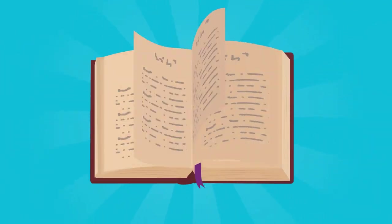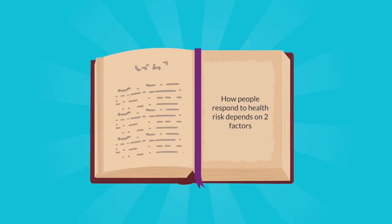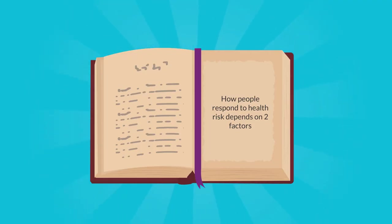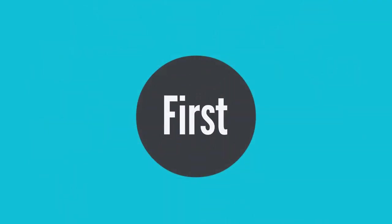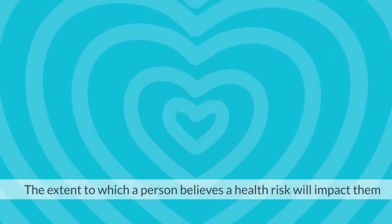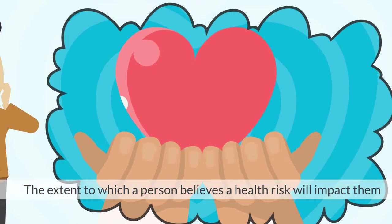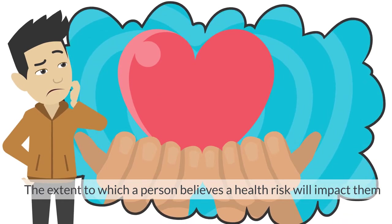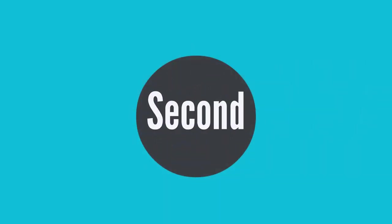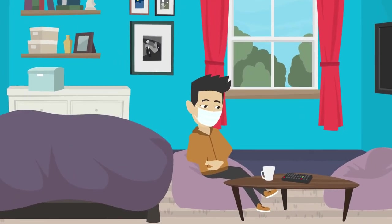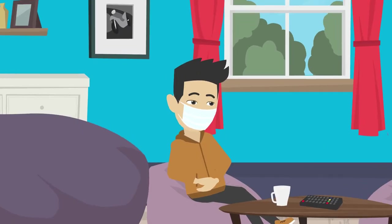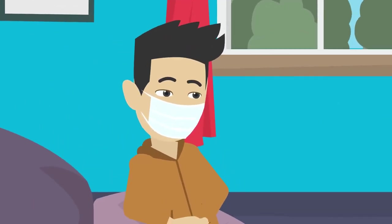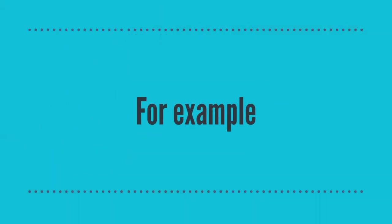The Health Belief Model argues that how people respond to health risks depends on two factors. First, the extent to which a person believes a health risk will impact them. Second, the extent to which they believe their actions can protect them.